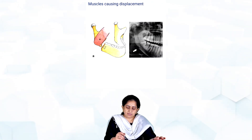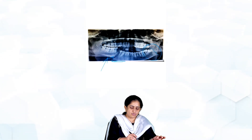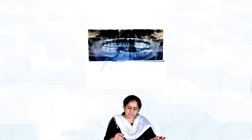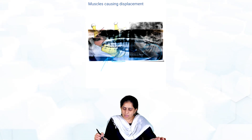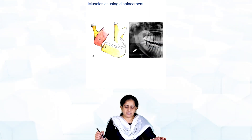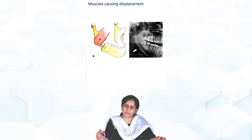Now when you look at a fracture of the angle of the mandible, like I showed you a fracture in this case, you can see that the entire angle is displaced over here. Now what are the muscles that are causing this type of displacement?